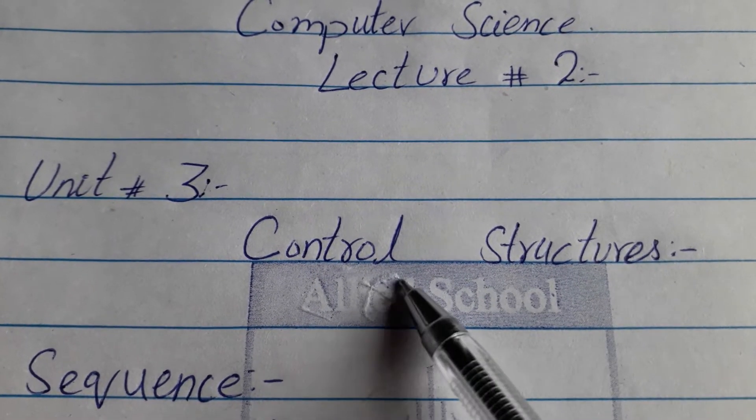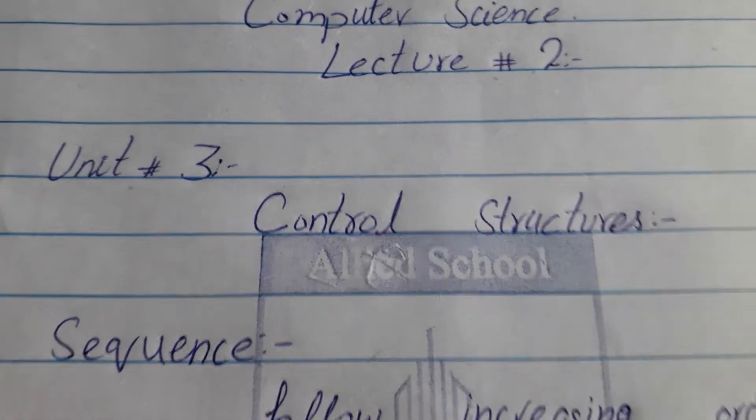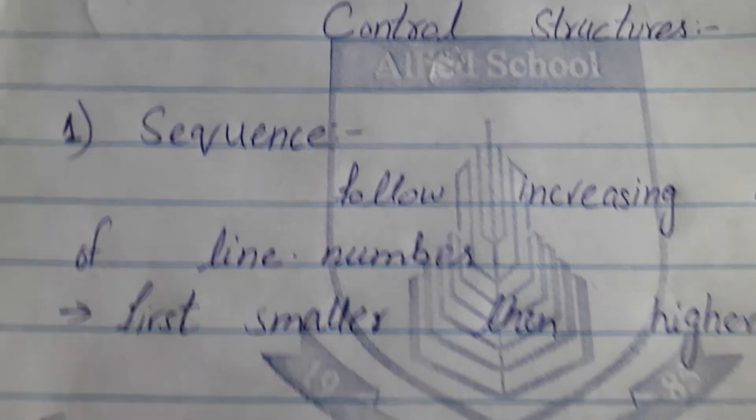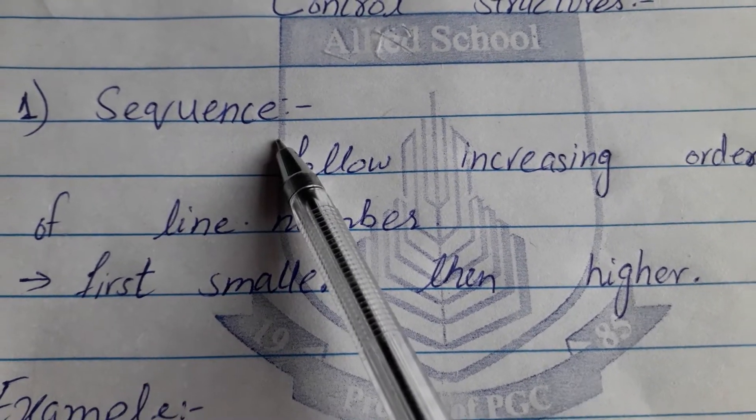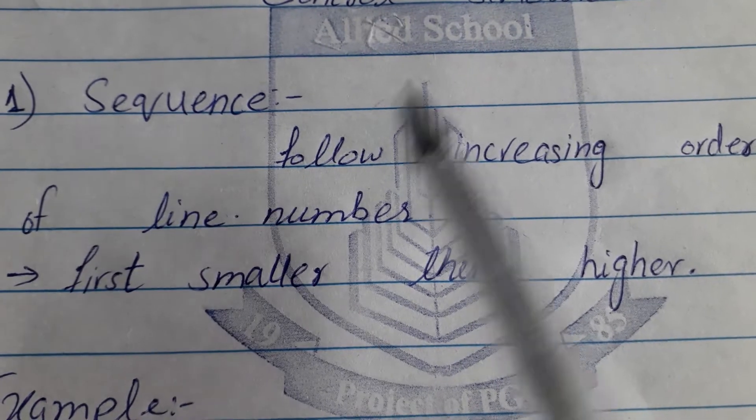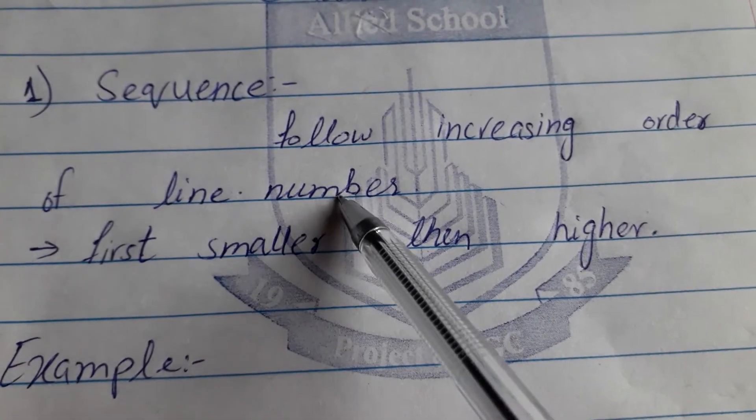Our three types of control structures are sequence, selection and loop. Today we will explain how the sequence works and how to work with the following, increasing order of line number.